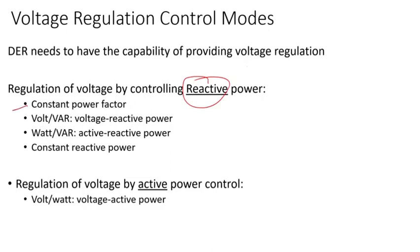So the modes include: constant power factor mode, volt-VAR mode, watt-VAR mode, and constant reactive power mode. Regulation of voltage can also be done by active power control — volt-watt.